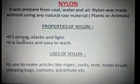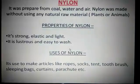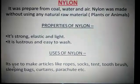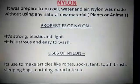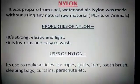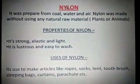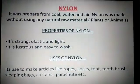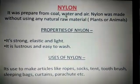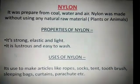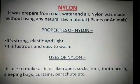Properties of nylon: it's strong, elastic, and light. It is luxurious and easy to wash. Uses of nylon: it is used to make articles like rope, socks, tent, toothbrushes, sleeping bags, curtains, parachutes, etc. You can add more or substitute other items you know. Nylon is made from coal, water, and air — not from any natural raw material.